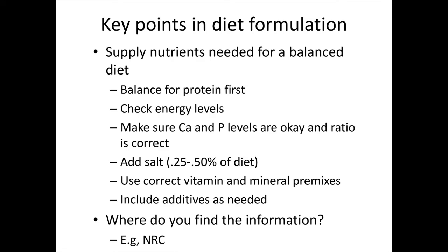Key points in diet formulation: first, supply nutrients needed for a balanced diet. We typically balance for protein first, then check energy levels, ensure calcium and phosphorus levels and ratio are correct, add salt to the diet (generally 0.25 to 0.5 percent of the total diet for non-ruminants), use the correct vitamin and mineral premixes — noting important species-specific differences in mineral tolerance and metabolic requirements — and finally, include additives as needed.